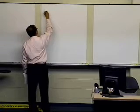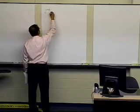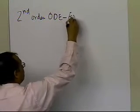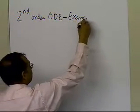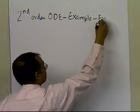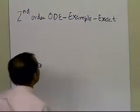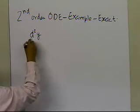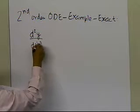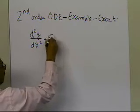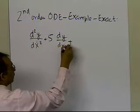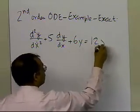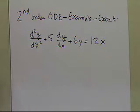In this segment, what we're going to do is we're going to take a second-order ODE, and we're going to take an example to find the exact expression. So let's take this example here: we have a second derivative of y, plus 5 dy by dx, plus 6 times y is equal to 12x. How do we go about solving this particular problem?